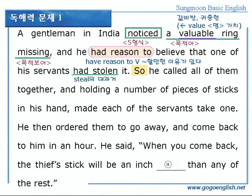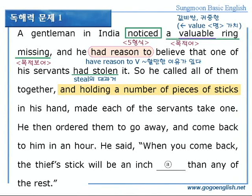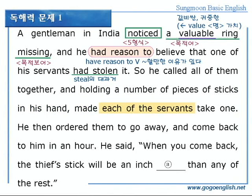반지의 주인이 하인 중 하나가 훔쳤을 거라고 생각한 것이 과거 시제이고요, 훔친 것은 그 이전 사건이니까 대과거 had stolen을 쓴 것입니다. 그럼 계속합니다. So, 그래서, he called, 그는 불렀다, all of them together, 그들 모두를 함께, and holding a number of pieces of sticks, 몇 개의 막대기를 잡고서, in his hand, 손에 잡고서, made, 시켰다, each of the servants, 각각의 하인들에게, take one, 하나씩 뽑도록 시켰다.